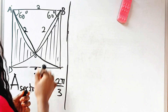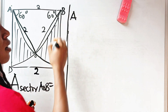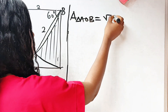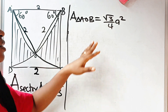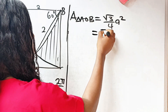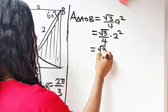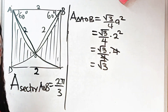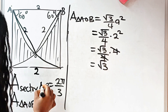Now let us look at triangle AOB. Triangle AOB is an equilateral triangle, so area of triangle AOB equals root three over four times a squared, where a is the side of the triangle. That gives us root three over four multiplied by four — the fours cancel — so the area of triangle AOB equals root three.